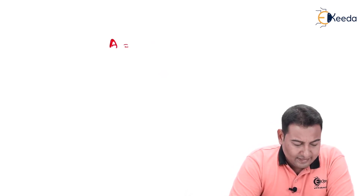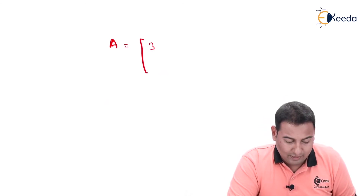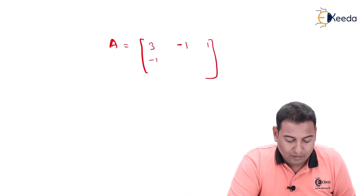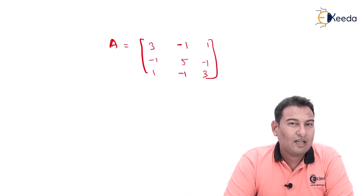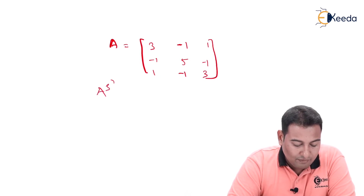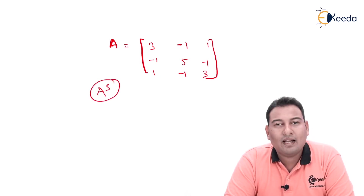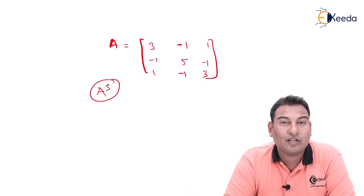Let me take one more example to elaborate on this concept. A is the first matrix we used: [3, −1, 1; −1, 5, −1; 1, −1, 3]. Suppose the question asks us to find the eigenvalues and eigenvectors of A cubed. What students generally do is compute A³, which gives very large numbers in the matrix.